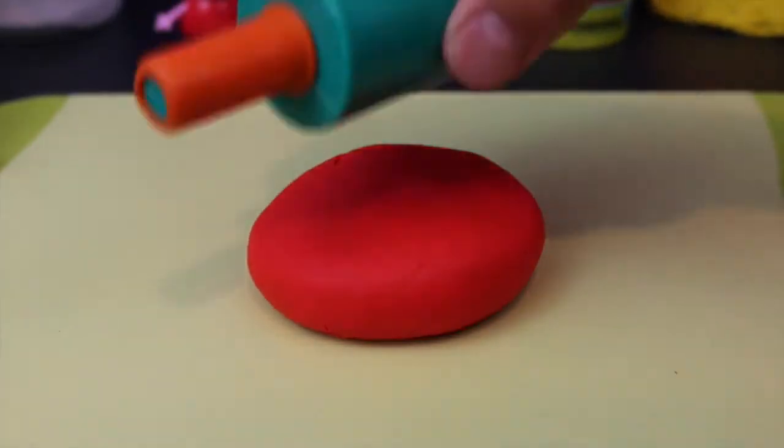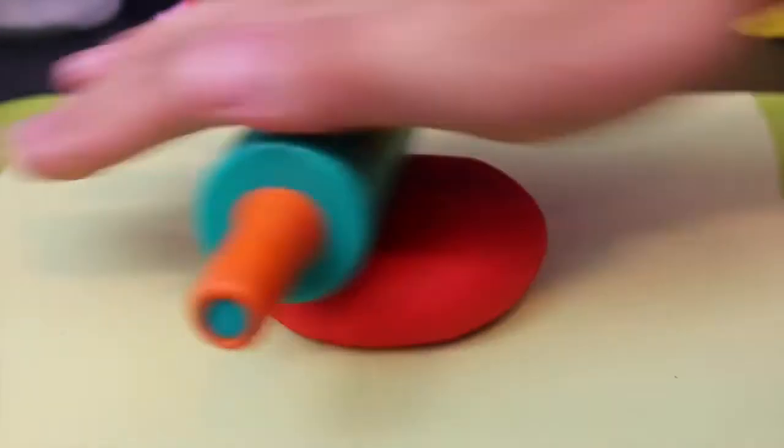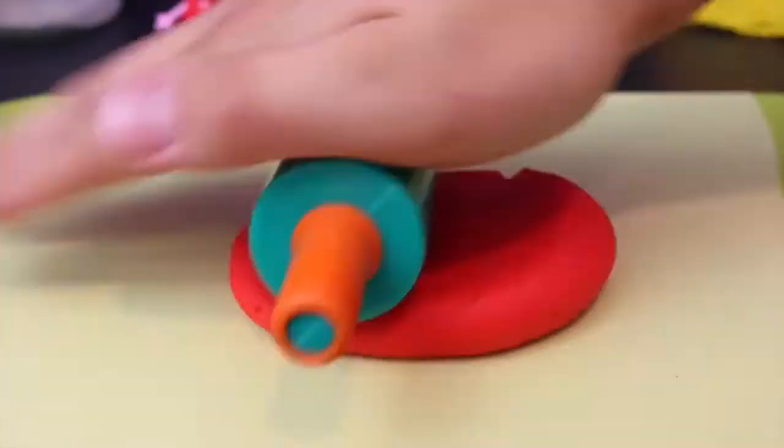And now that I have a nice smooth mound of Play-Doh I'm just gonna take the rolling pin here and start rolling it out really nice and thin so I can make a good sheet to cut out the dress shape out of.